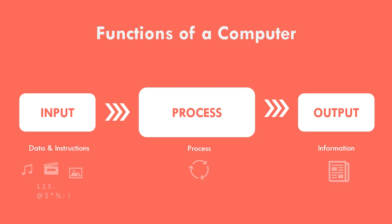The basic functions of a computer are entering data, processing them, and producing processed data. Data and instructions are input, then after processing, information is obtained as an output.